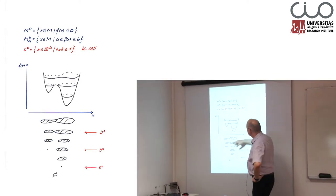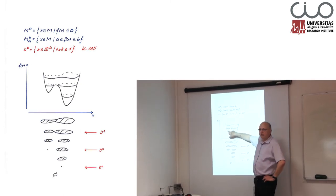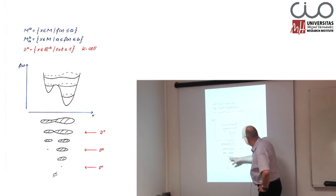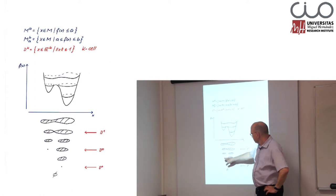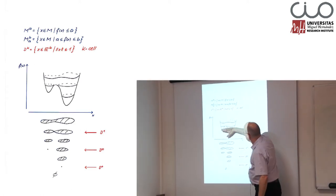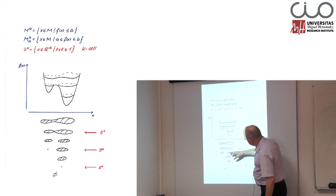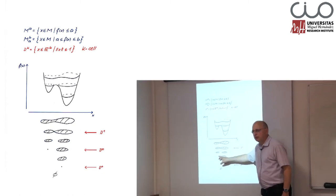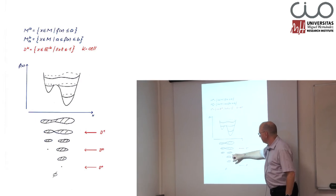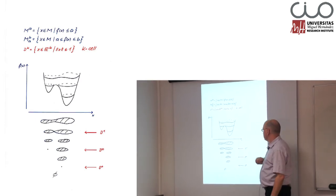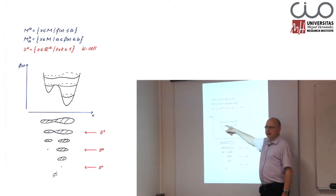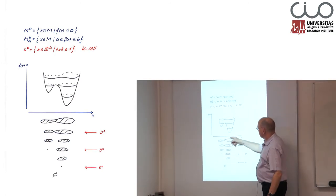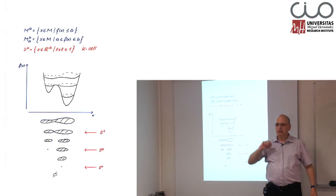The next change will happen if we reach the level with this local minimizer — here a new component is born. Then we go further up. We have two connected components, but these two connected components are topologically the same as this newborn component and the previous one. Here nothing is happening. And then the next change in the topological structure will happen when we pass the saddle point — both will be glued together and we get a connected set as the corresponding level set.